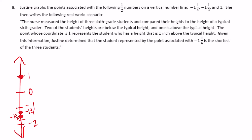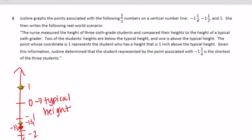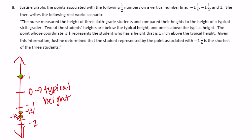The scenario: a nurse measured the heights of three sixth-grade students and compared them to the height of a typical sixth grader. Two students' heights are below the typical height and one is above, with zero representing typical height. The point at one represents the student one inch above typical height — I agree with that. However, Justine determined that the student at negative one and one-fourth is the shortest of the three. Looking at the number line, negative one and one-half is actually further below zero, so I disagree — negative one and one-half represents the shortest student.